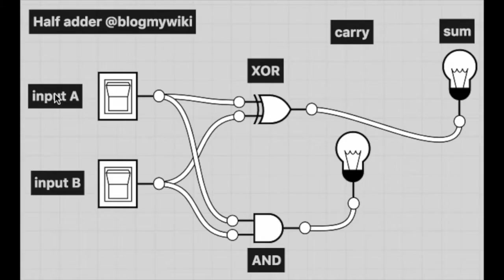If you connect up an AND gate and an exclusive OR gate, you can use it to add two binary numbers together. This is called a half adder. Each switch is a 0 or a 1 depending on whether it's turned on or off, and the lights show the sum — a light that's on represents a 1, and if it's off it represents 0.